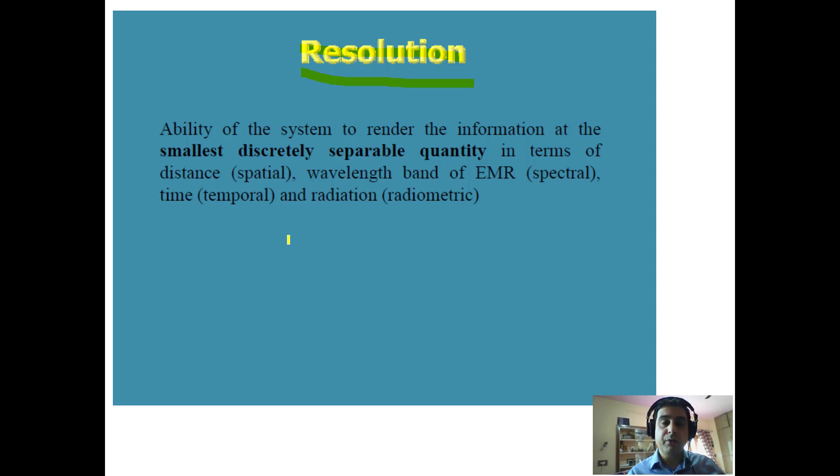How are we going to define resolution? Resolution is the ability of a system to render the information at the smallest discretely separable quantity in terms of distance (spatial resolution), wavelength band of electromagnetic radiation (spectral resolution), time (temporal resolution), and radiation (radiometric resolution). Keeping this definition in mind, we are going to know in detail about these different kinds of resolutions.